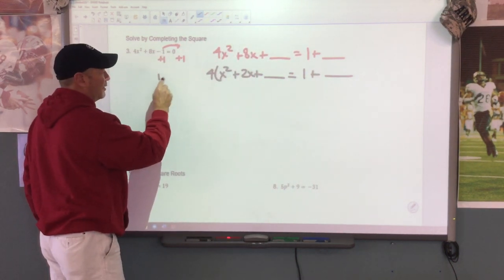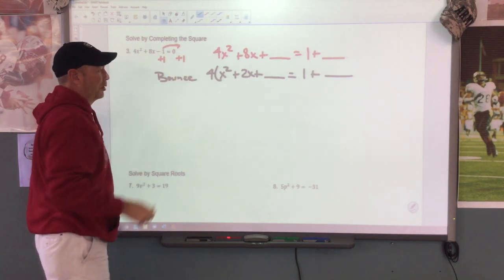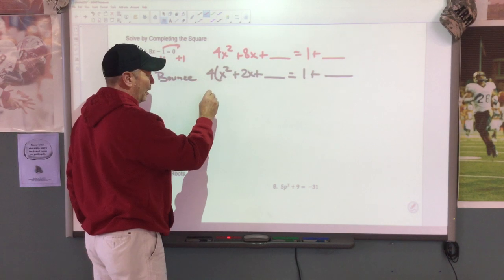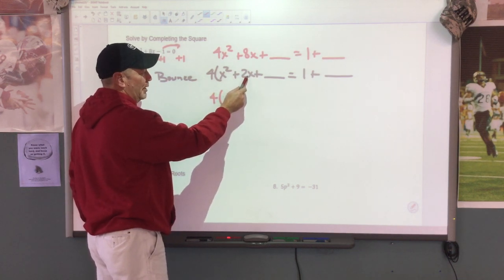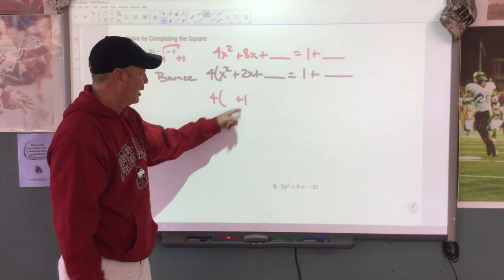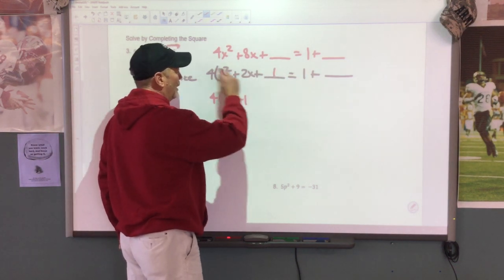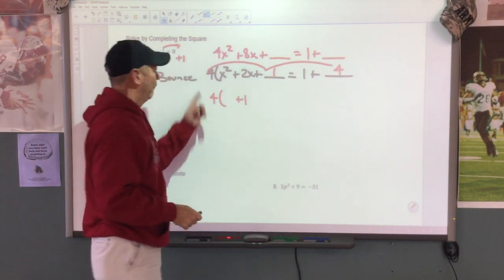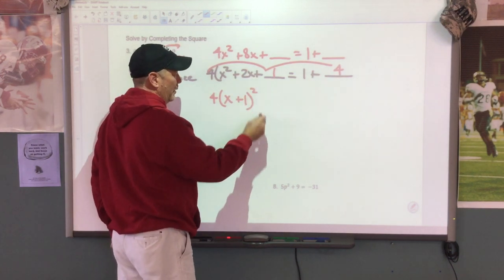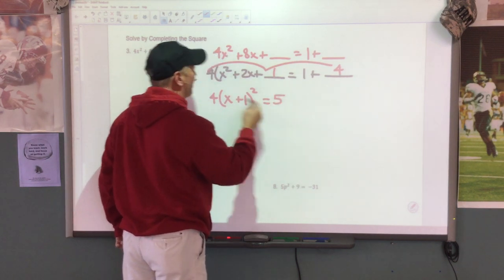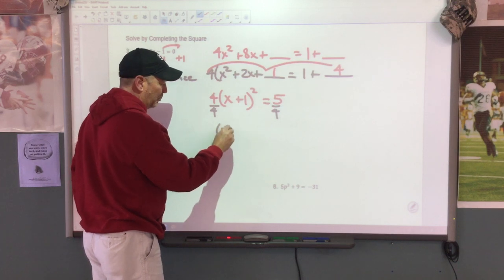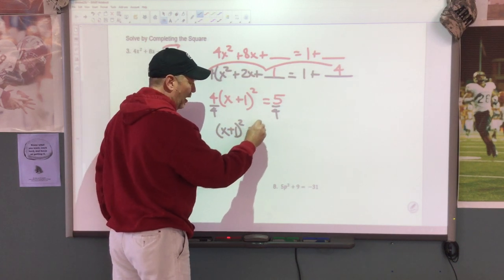The rule is, if I factor, I'm going to bounce. Since I factored this 4 out, I'm going to have to bounce it back in. So my next step is to keep the 4 coming. I'm going to ask you to take half of b. Half of my plus 2 is a plus 1. When we square this, 1 times 1 is 1. We bounce the 4 and we get a 4 over here — 4 times 1 is 4. We bring down the x and the parentheses squared. We're going to say 1 plus 4 is 5. We're going to divide by 4 on both sides. I get x plus 1 squared equals 5 over 4.